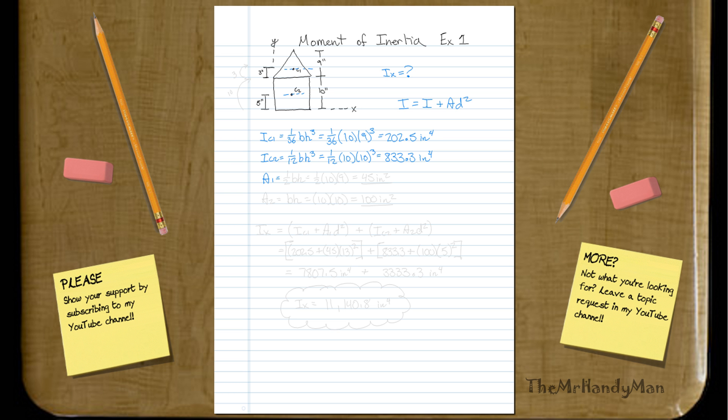So area one, area of the triangle, is going to be one-half base times height, which will equal one-half ten times nine, which we know equals forty-five inches squared. Area two will just equal base times height, which we know is ten times ten, which equals a hundred inches squared.